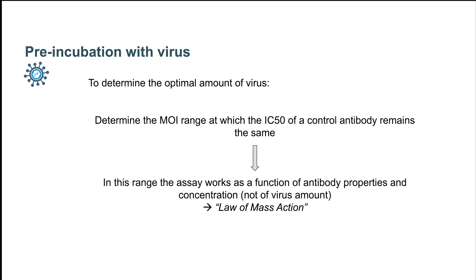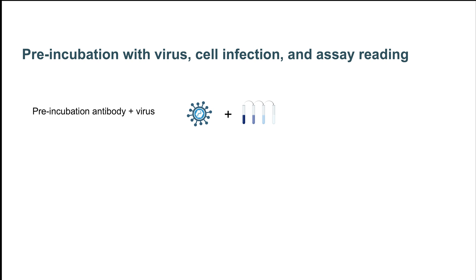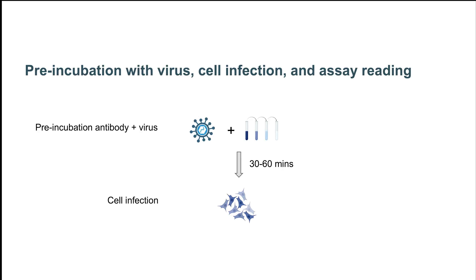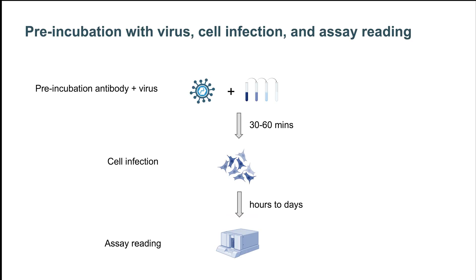Within this range, we will abide with the so-called law of mass action, which ensures that we are operating at MOIs where the assay works only as a function of the properties and concentrations of the antibody, and not of the amount of virus. This optimal amount of virus is then incubated with each dilution of the sample or control, generally for 30 to 60 minutes, and then added to the assay cells, generally for as long as it takes for the assay readout to fully develop.